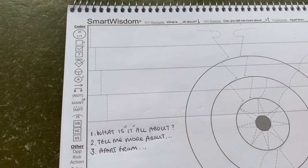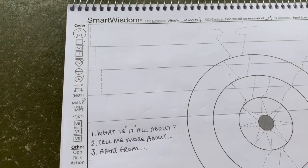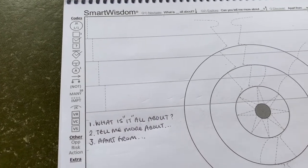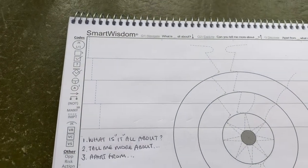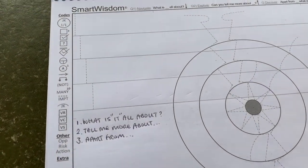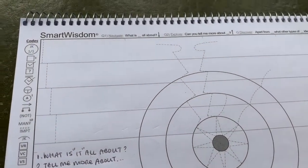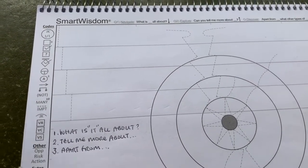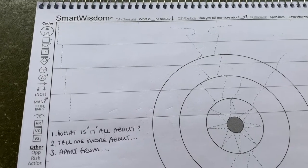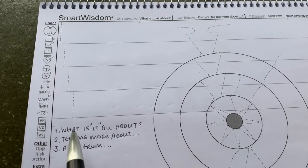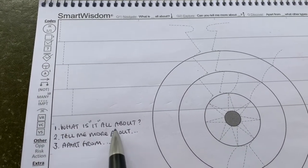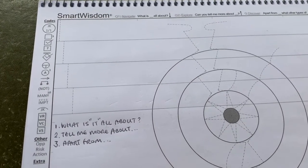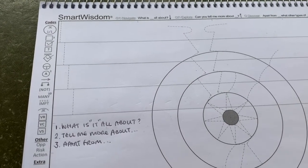Before we start getting into how to actually jot down and capture information on the page, there are just a few questions to consider. I use the Smart Wisdom techniques to manage this information, but you could easily do this on a piece of paper. The same three questions will still apply. The first question is: when you come up with your first idea, what is it all about? Can you chunk it back to a main topic?